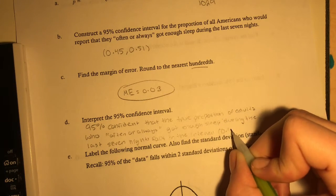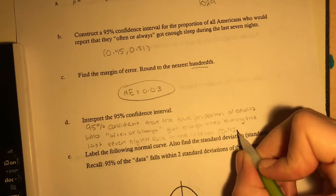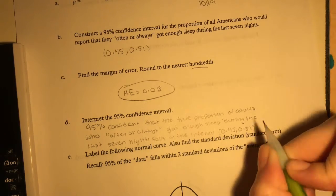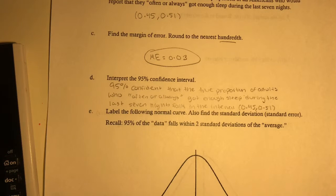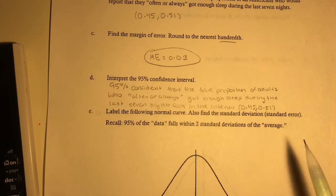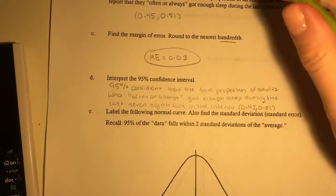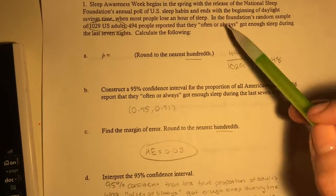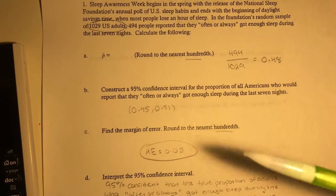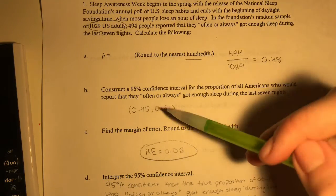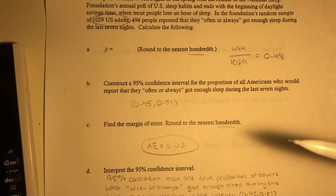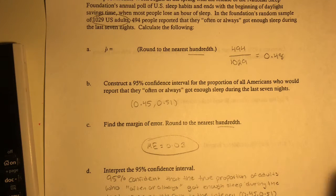Which is right here, 0.45 and 0.51. All this interpretation is asking you to say is that you are 95% confident that the true proportion of adults who often or always get enough sleep falls within the interval 0.45 to 0.51.